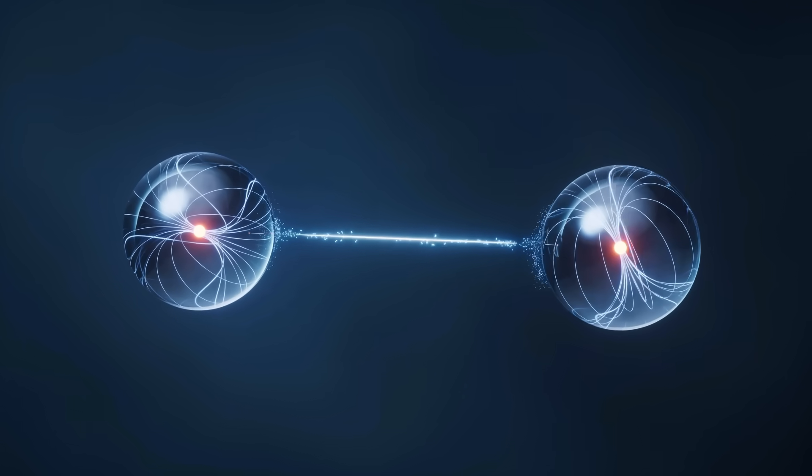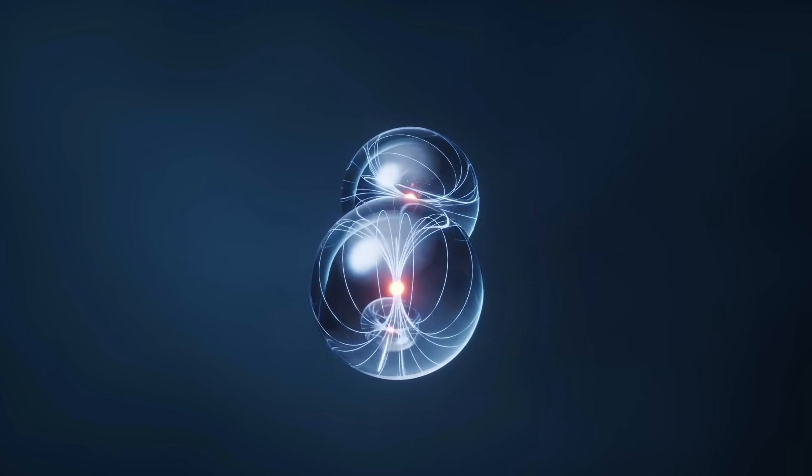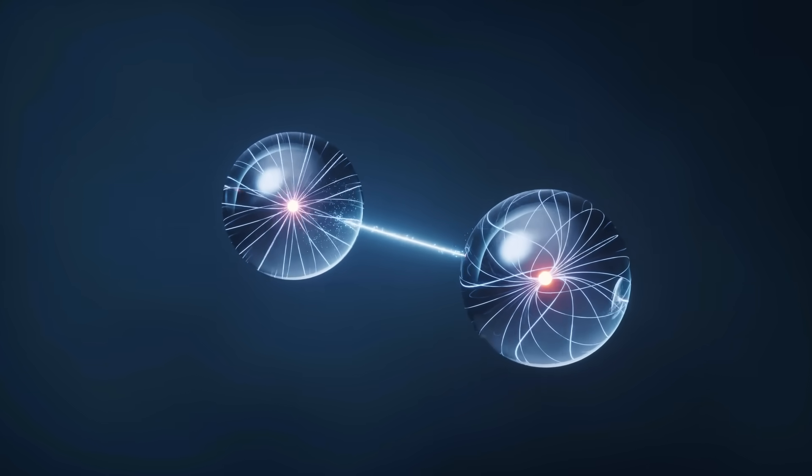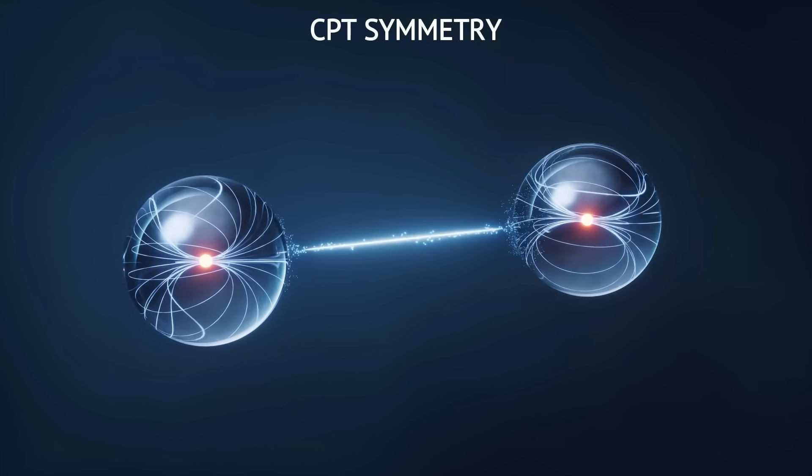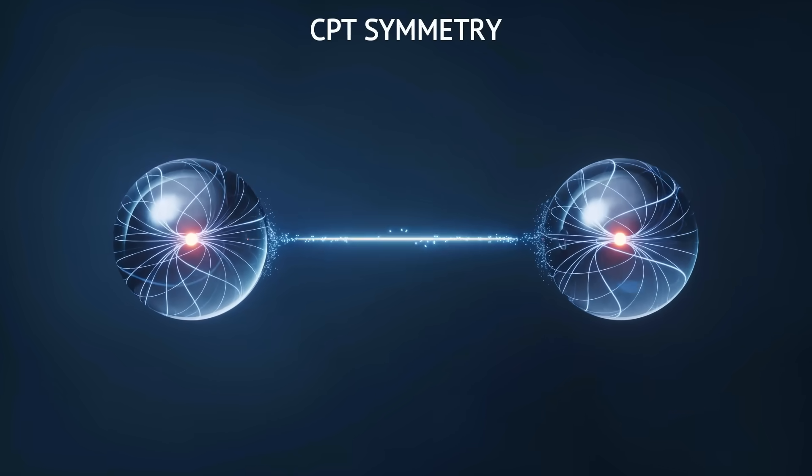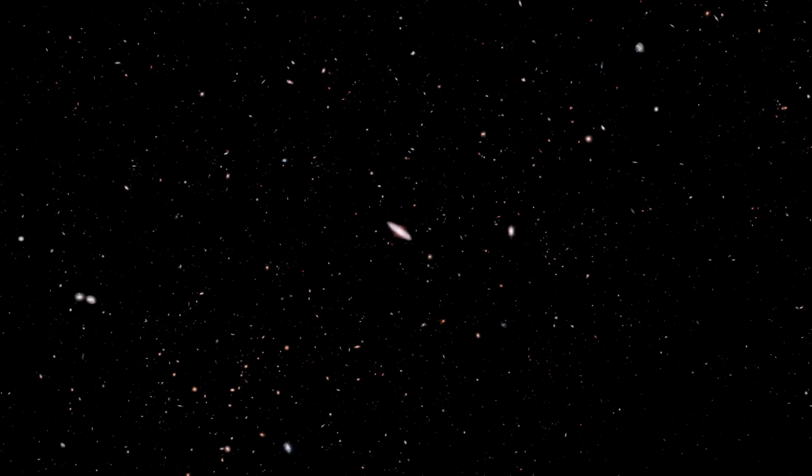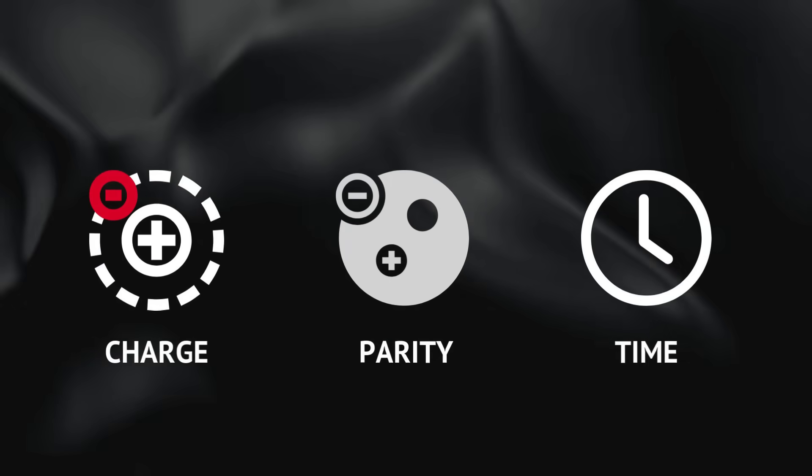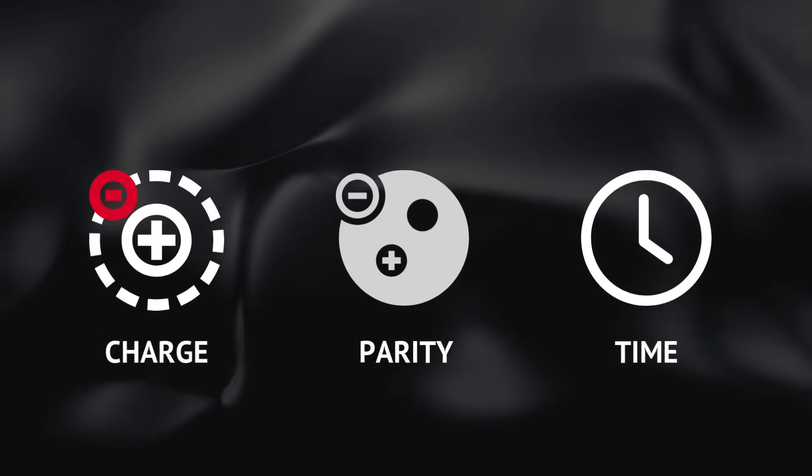This mirror at the Big Bang aligns with the idea that every physical process has a mirror counterpart, where space, time, and particles are reversed, thus following CPT symmetry, a fundamental balance in nature. To understand CPT symmetry, imagine the universe as a grand stage where particles act out a play. In this play, charge, parity, and time govern how things behave.